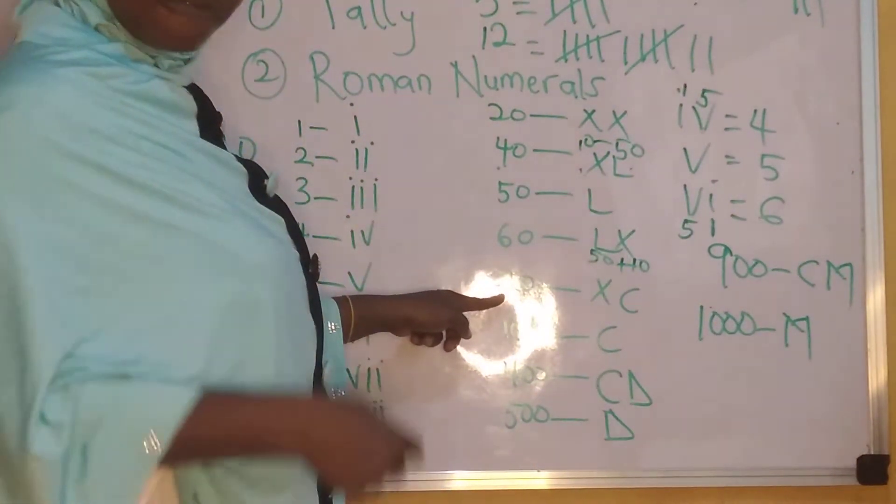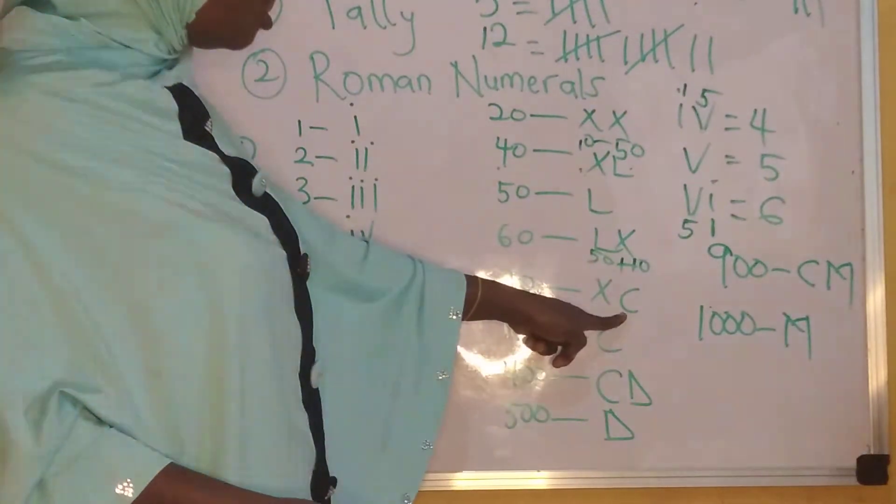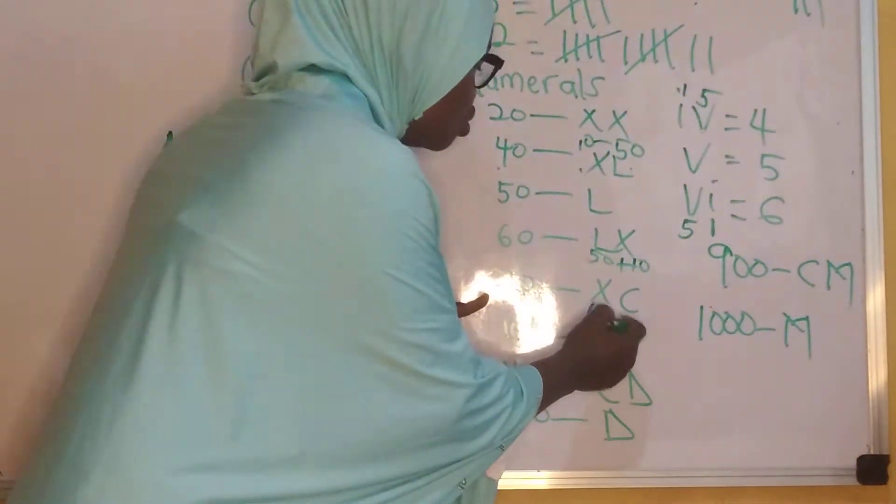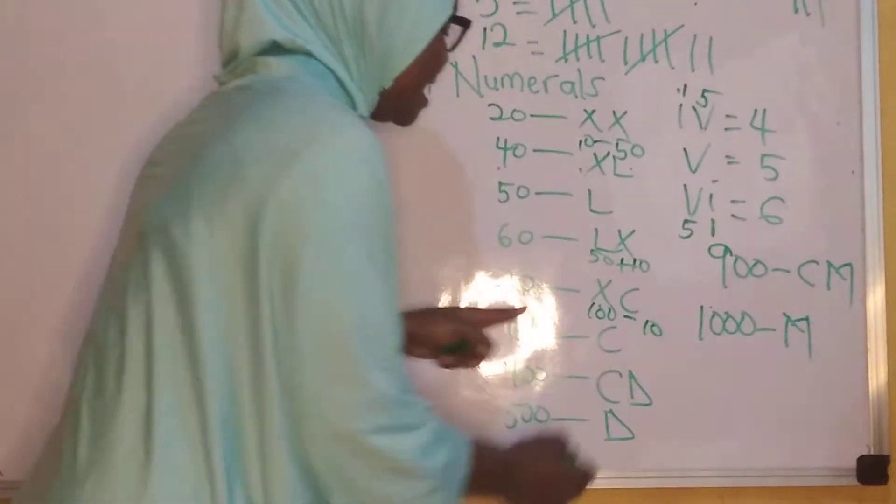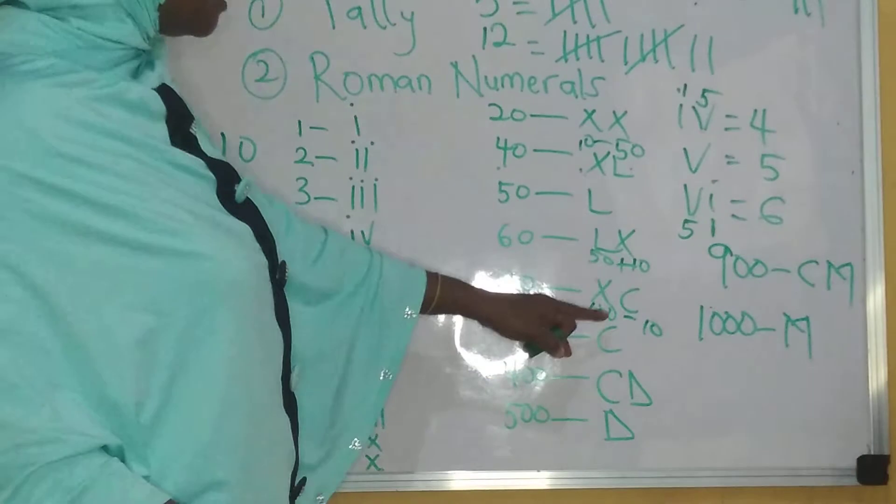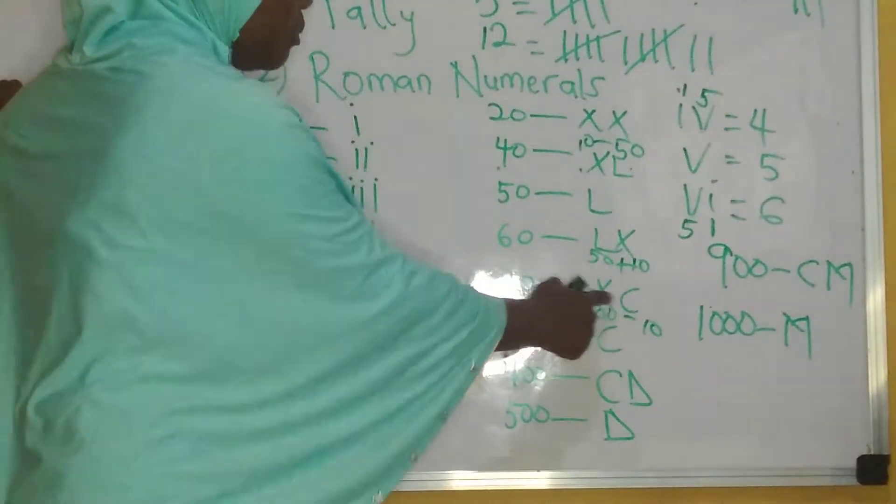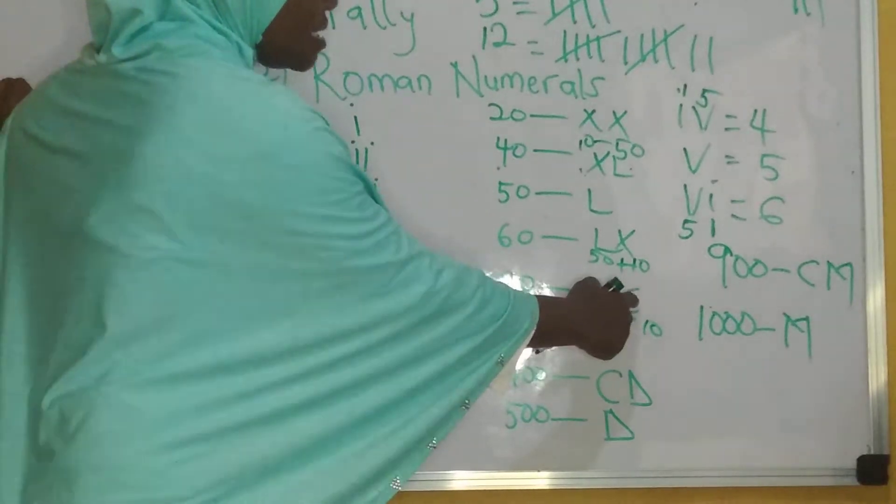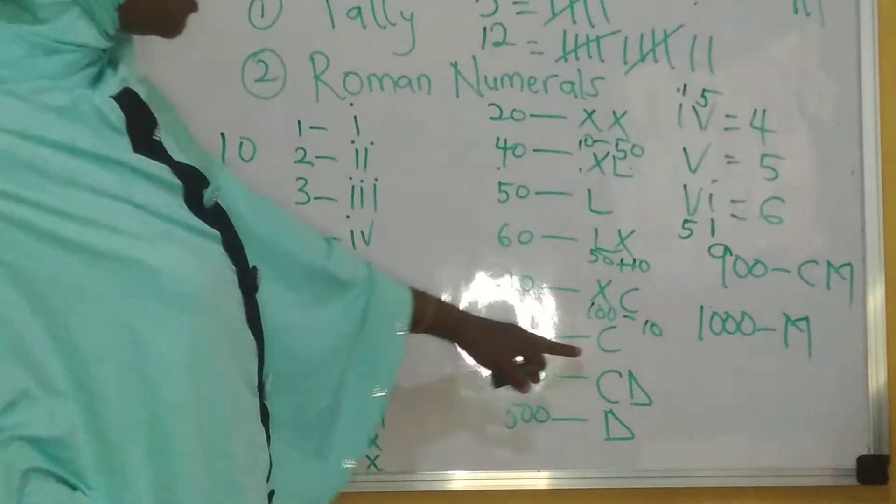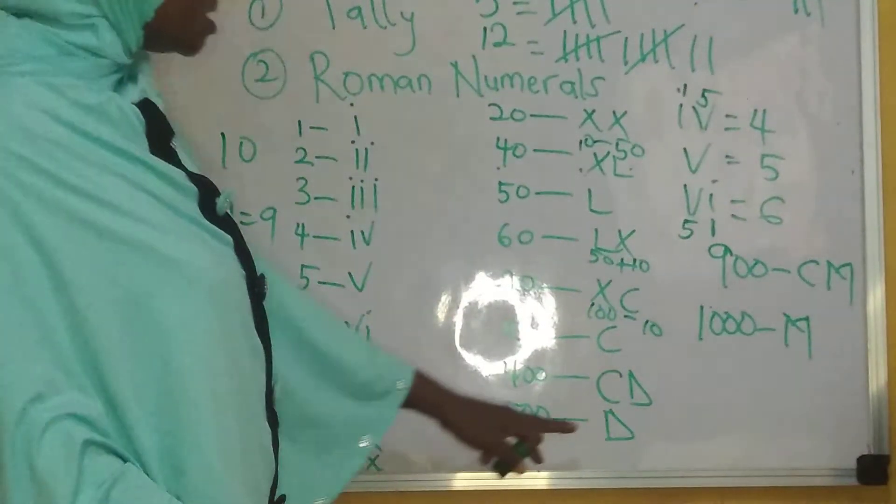Now, my 90 follows the same pattern, which is XC. That is 100 take away 10. And that is 90. Why am I subtracting? I'm subtracting because X is a smaller number and it's written first. And C is 100, a larger number. That means I have to subtract. So my 100 is C.